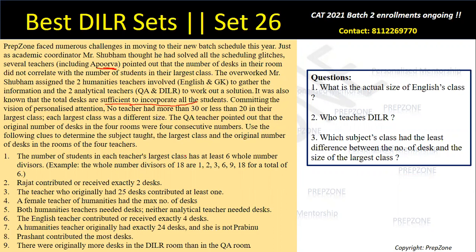So hint number one says the number of students in each teacher's largest class has at least six whole number divisors. And I know that the number of students has to be between 20 and 30.